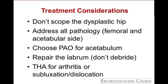Treatment considerations for the dysplastic hip: arthroscopy is rarely the correct answer — be careful choosing it in patients with substantial dysplasia. Address all pathology — most patients with dysplasia have both femoral and acetabular-sided pathology. On the acetabular side, the periacetabular osteotomy is the treatment of choice. Always repair the labrum if given the option. If the patient has substantial joint destruction with arthritis or joint space narrowing, total hip arthroplasty is the treatment of choice.